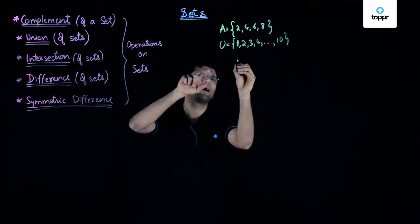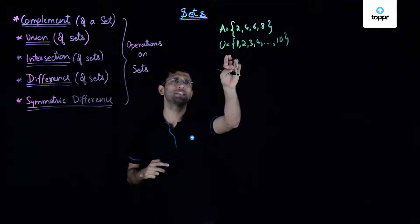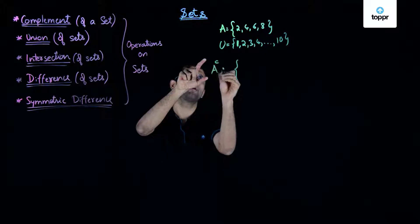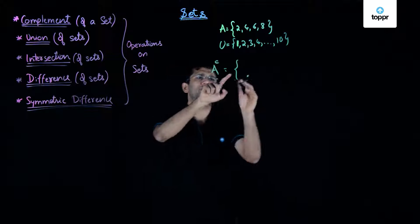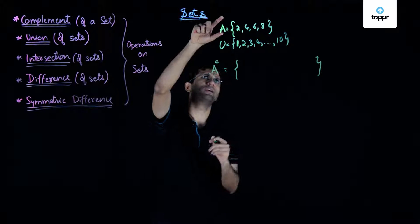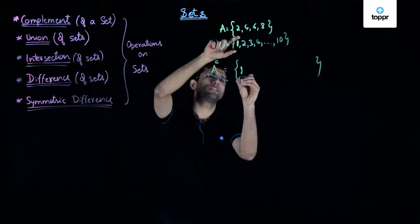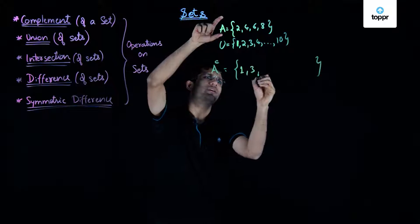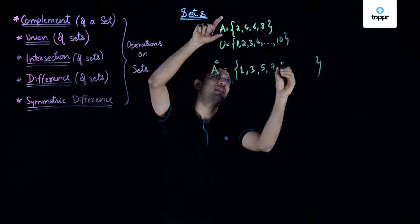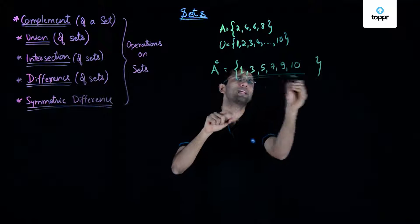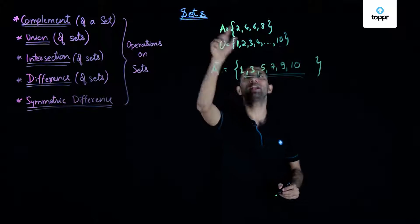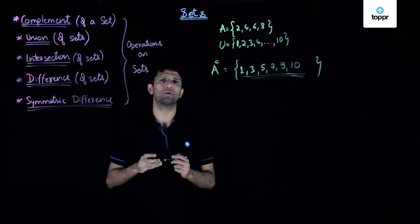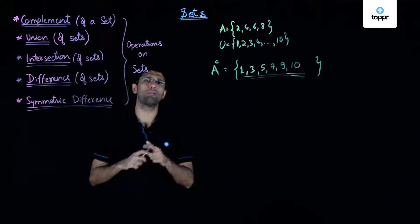Complement of any set is given by all the elements that are in the universal set but not in that given set. Complement of A, denoted by A' or A complement, consists of all elements in the universal set but not in A. So 1, 3, 5, 7, 9, and 10 are the elements present in the universal set but not in set A, and so A complement consists of these elements.